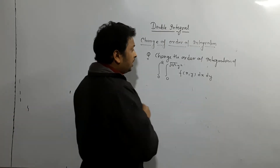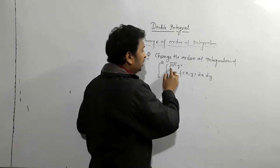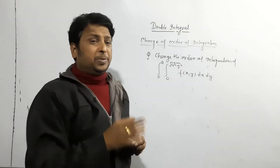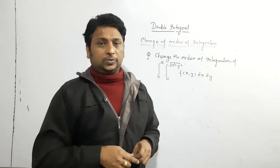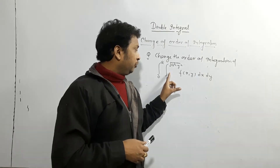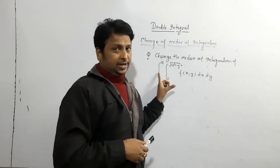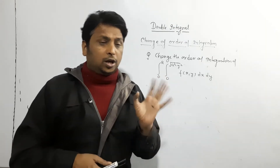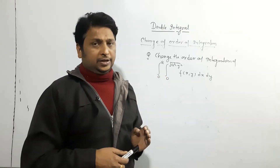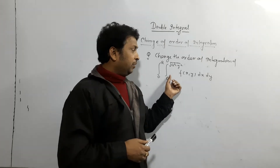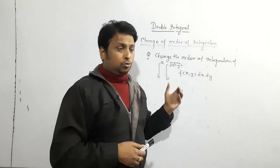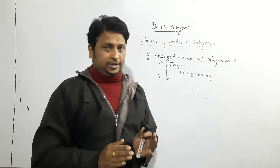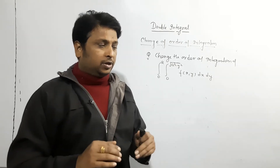The first limit, 0 to √(a²−y²), is given in terms of y, which means it is the x limit. So first we integrate with respect to x, and then y. The y limit is given as 0 to a. By changing the order of integration, first we have to integrate with respect to y and then x.